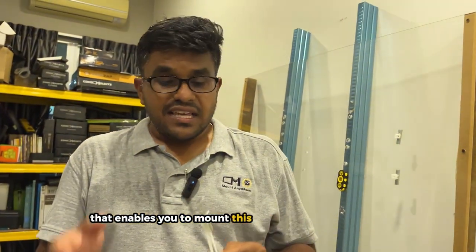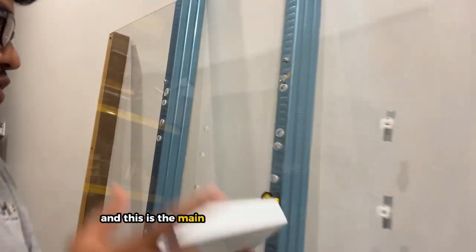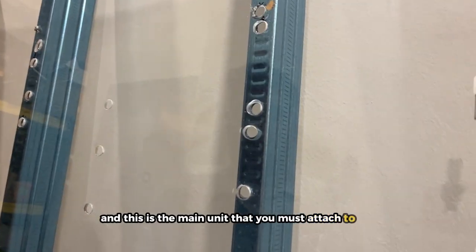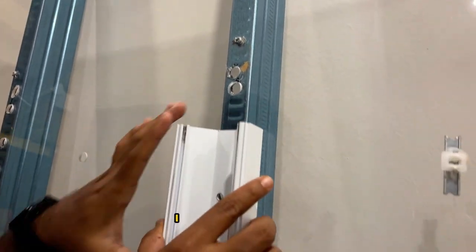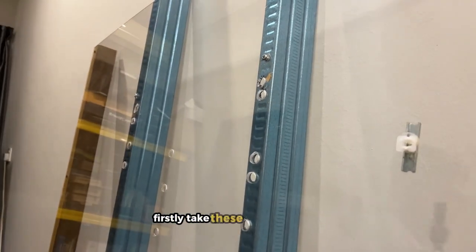I've already made some holes right here and this is the main unit that you must attach to the wall. I have made some holes and I'm going to show you how to do it right now. Firstly, take these anchors - these are called elephant anchors and I'm going to place this in.